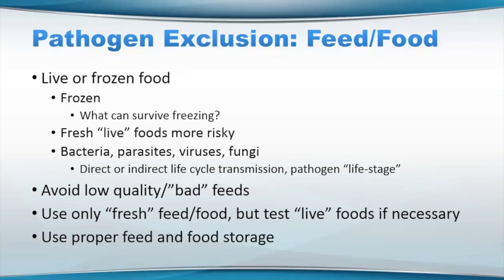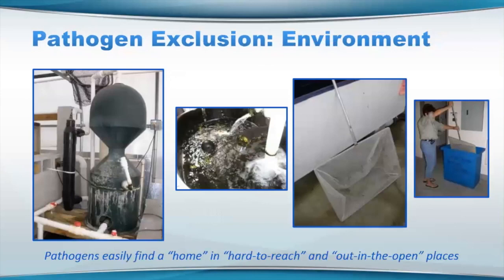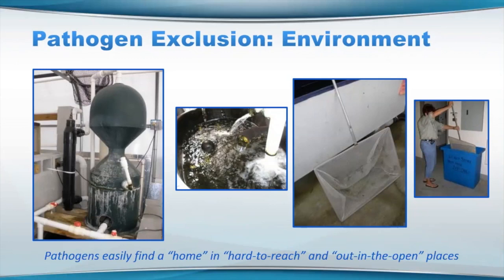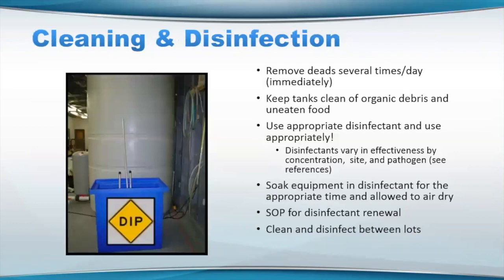With regard to feeds as well as live and frozen foods, you really want to make sure you're using proper storage. The environment, depending on your systems, pathogens can easily find a home in hard to reach and out in the open places. You've got a filter here — there's potential for pathogens to be in the pipework. There's a small sump in the second picture. Maybe some sick animals were on the floor, the floor didn't get bleached down. There's a net in the third picture that could be picking up pathogens. Just got a picture of a net dip in the fourth. There are a lot of different places that you may not necessarily consider, but these are things you really need to think about when you are looking at the big picture.